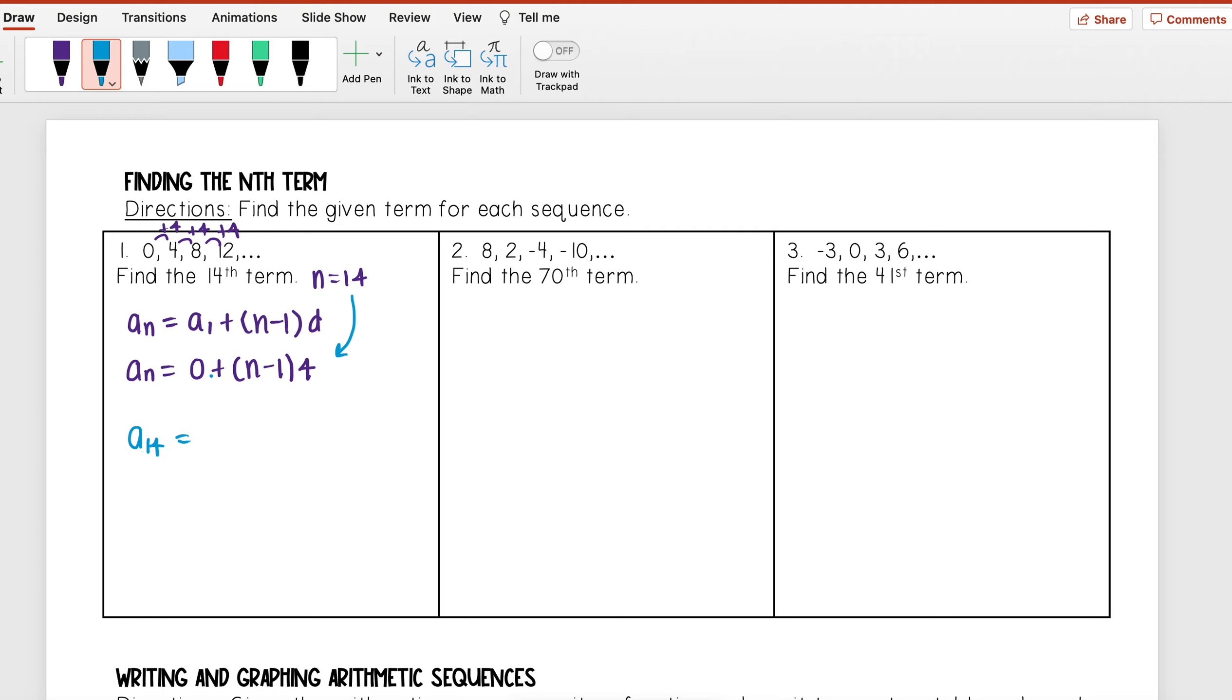This is equal to 0 plus (14 - 1) times 4. Well 0 plus anything is just that, so I have 13 times 4, and then when I multiply 13 times 4 I get 52.